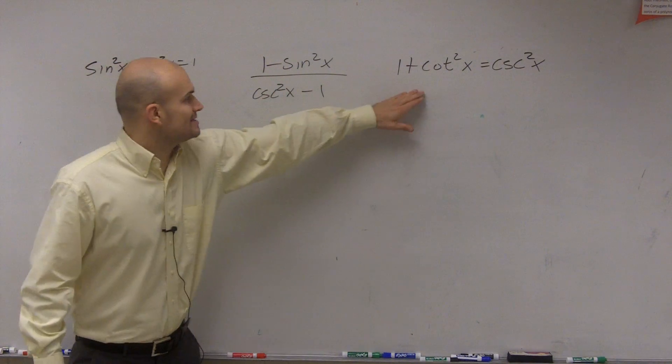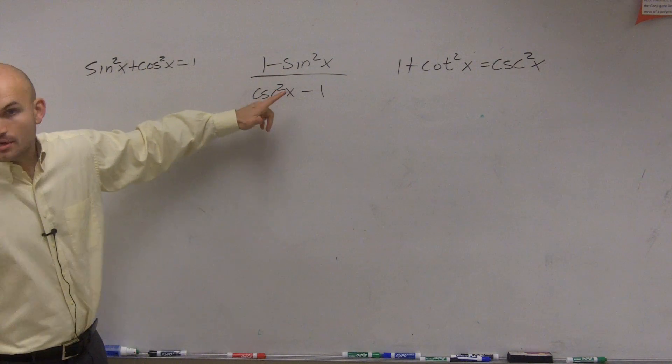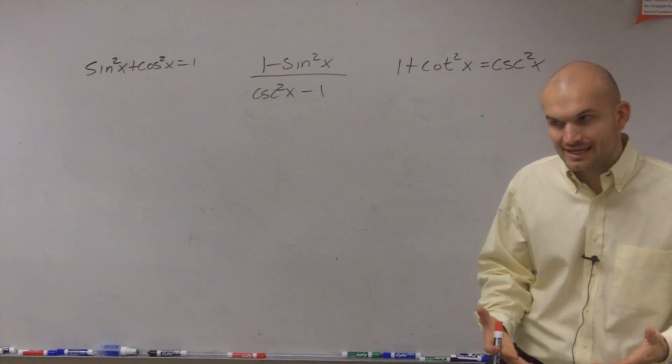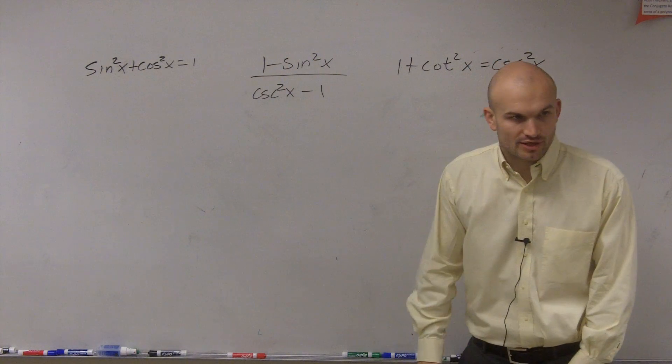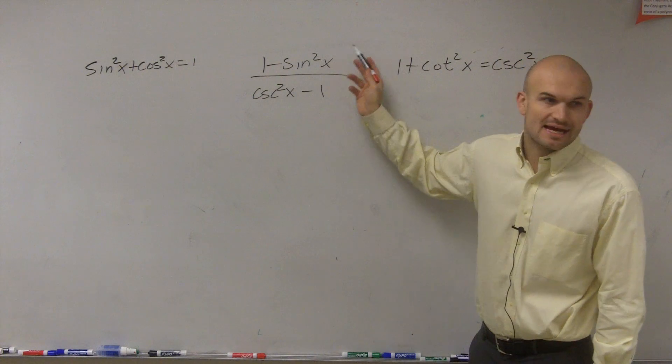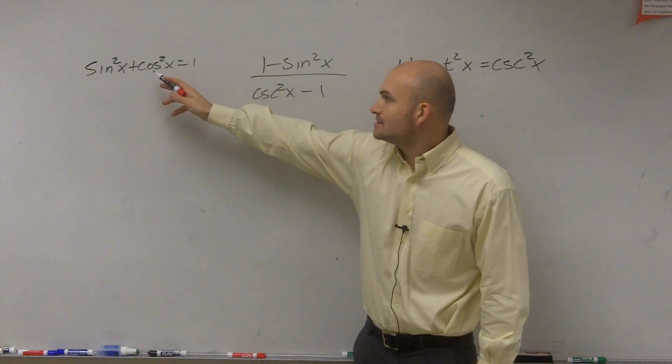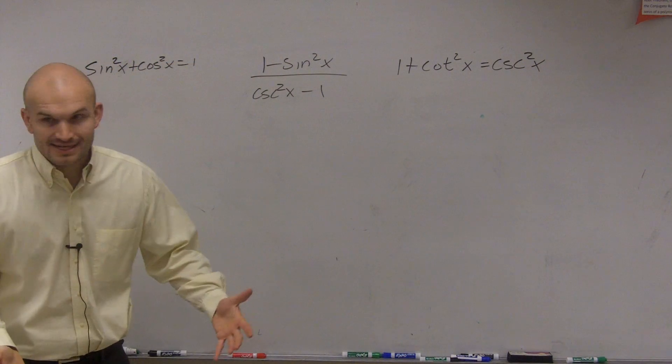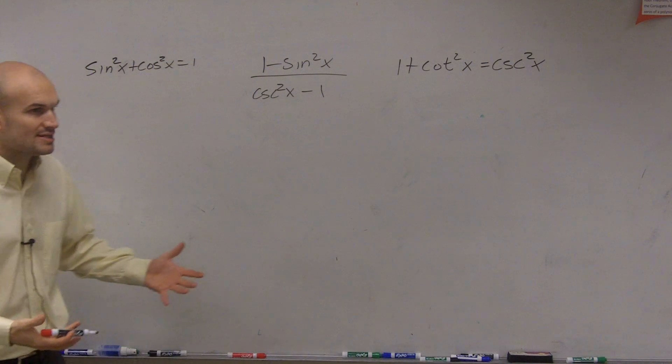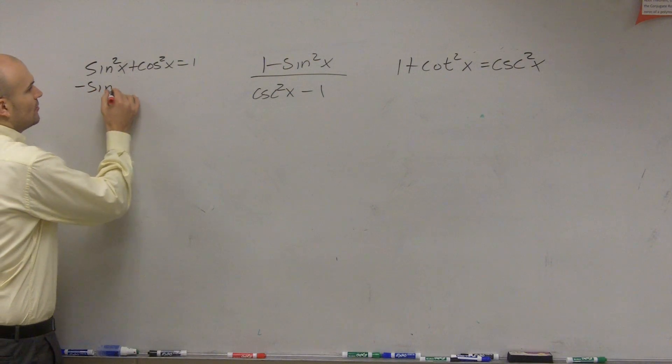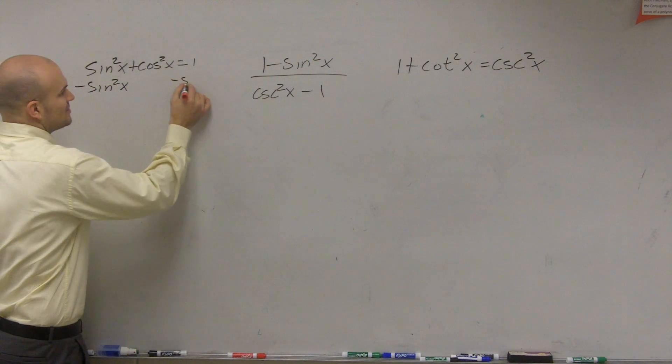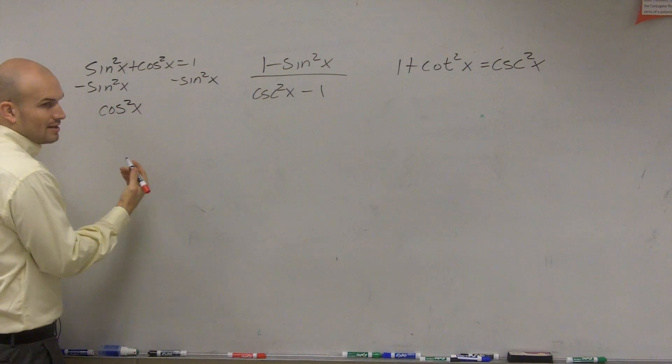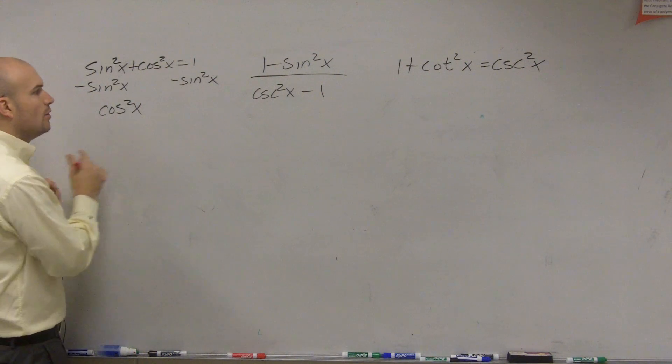These are the two identities, but is that what we have up here? No. So we're going to transform our Pythagorean identities so they can fit into what we're looking for. This says 1 minus sine squared of x. Here I have sine squared of x plus cosine squared of x. What happens if I subtract sine of x on both sides? Is my equation still going to be the same and equivalent? Yeah.